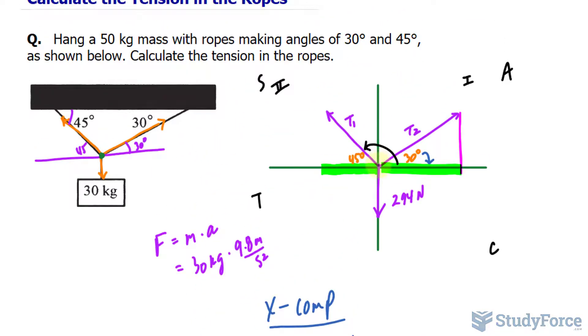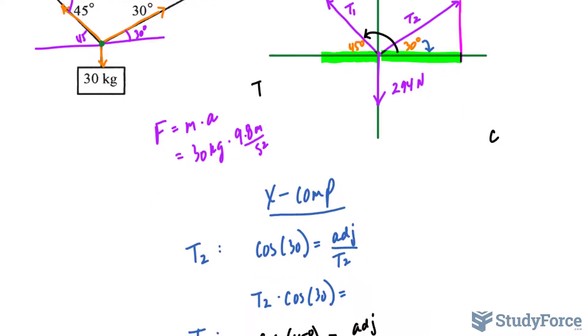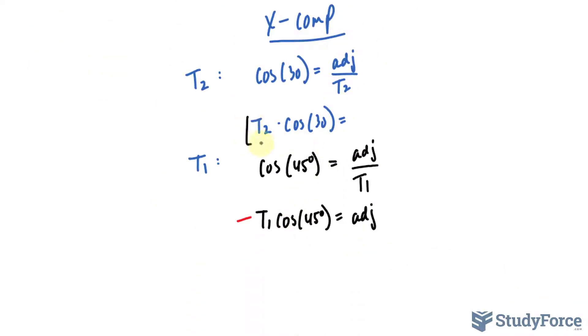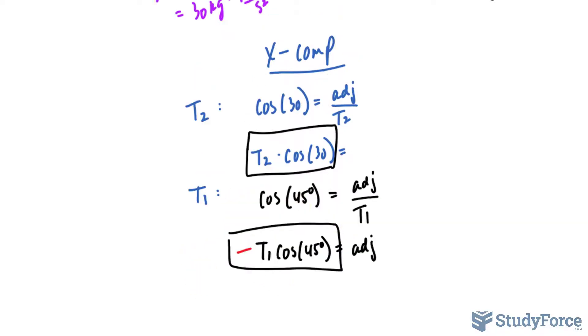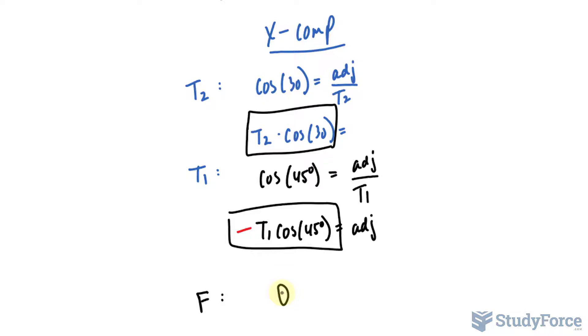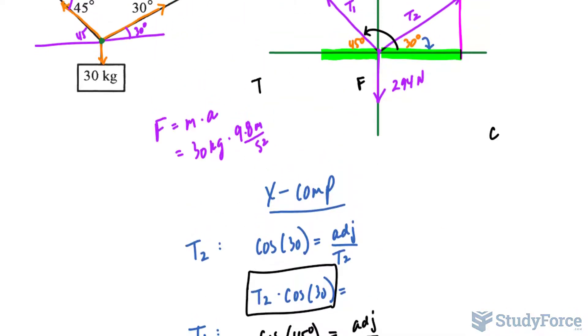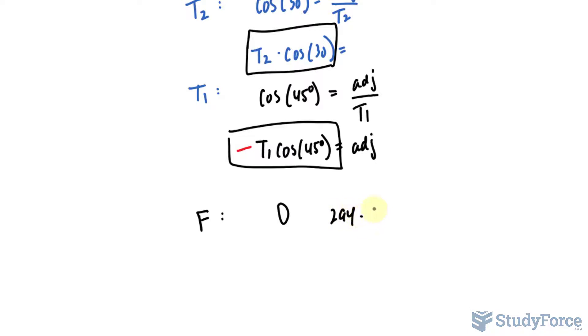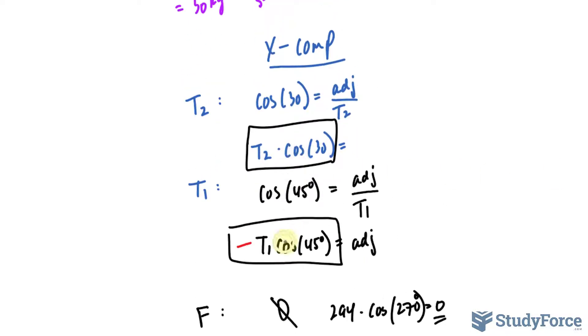Now we have to find the x component of this vector that's going directly down. But if you ever have a vector going directly down or up, the x component is automatically 0. So we will be adding this plus this plus 0 for that third force, which I'll call F. The x component of F is 0. Now if you want to find this more technically, you can write down the force being 294 times cosine at 270 degrees, and this should give you 0. That's the technical way, but the other is the more logical approach.